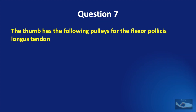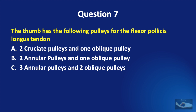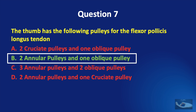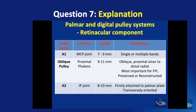Question number seven: the thumb has the following pulleys for the flexor pollicis longus tendon — two cruciate and one oblique, two annular and one oblique, three annular and two oblique, or two annular and one cruciate? The answer is two annular pulleys and one oblique pulley. The retinacular component consists of three pulleys: the A1 pulley over the metacarpophalangeal joint, the oblique pulley over the proximal phalangeal region, and the A2 pulley over the interphalangeal joint.